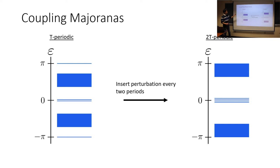What we do is we insert a perturbation every two periods. And what that does is that halves the quasi-energy spectrum and it forces these pi modes to fold to zero energy.